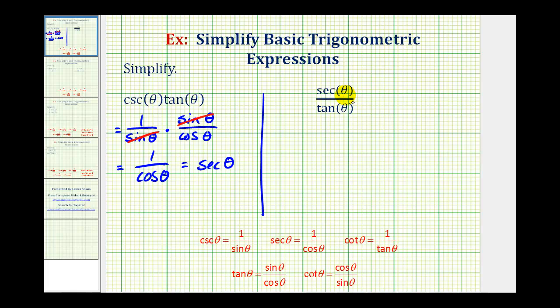Here we have secant theta divided by tangent theta. Well, secant theta is equal to one divided by cosine theta, and tangent theta is equal to sine theta divided by cosine theta.